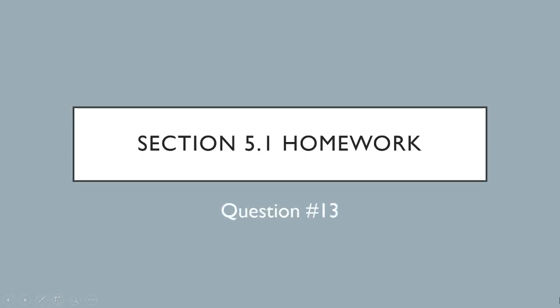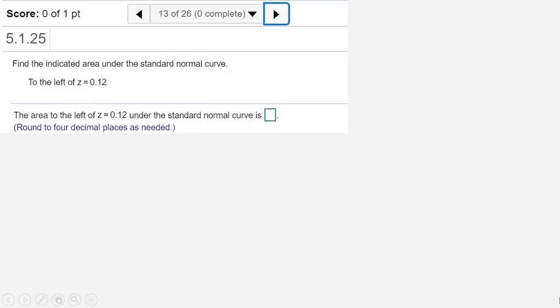We're looking at homework from section 5.1, question number 13. Find the indicated area under the standard normal curve to the left of z equals 0.12.